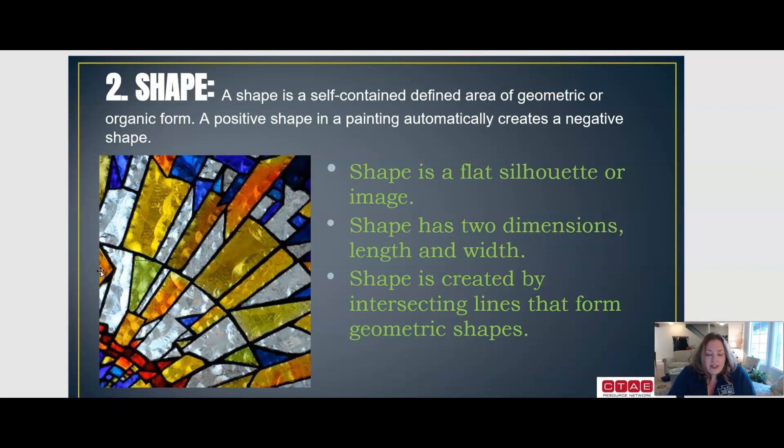Then we have shape. Shape is defined as self-contained area with geometric or organic form. A positive shape in a painting automatically creates a negative shape. Shape is a flat silhouette or image with two dimensions, both length and width. Shape is created by intersecting lines that form geometric shape.